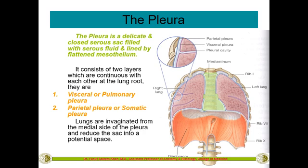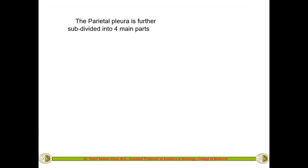The lungs are invaginated from the medial side of the pleura. As seen during development, they invaginate and occupy most of the area, reducing the sac into a small potential space that is only clinically important when it is enlarged.